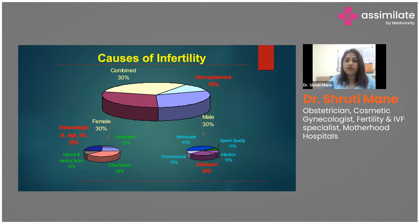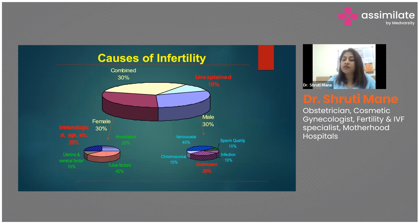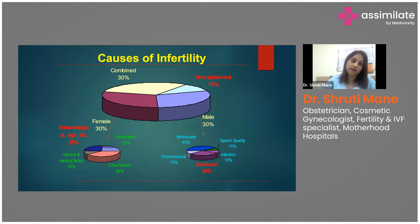Female factor infertility can be categorized by level. At the ovarian level: ovulatory dysfunction such as premature ovarian failure, PCOS with anovulatory cycles, or endometriosis reducing oocyte quality. Immunological or autoimmune factors can also affect the ovaries — patients on chemotherapeutic or immunosuppressive agents may have a deleterious effect on their ovaries. At the uterine and cervical level: fibroids, polyps, adenomyosis, or cervical factors can be obstructive.